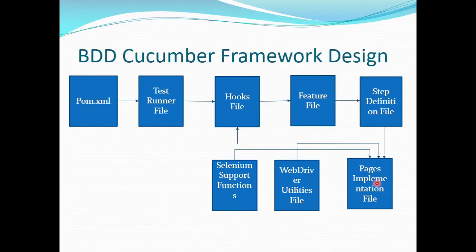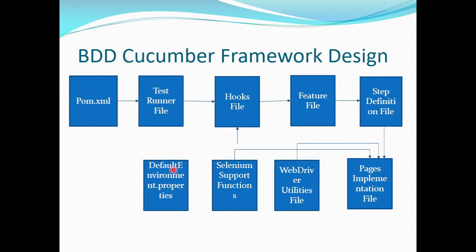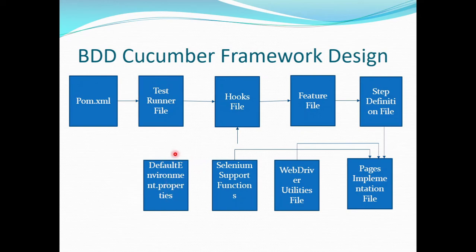Next in the execution we have the default environment.properties file. This is a .properties file where we define all the environment properties related to the application — such as the URL, username, password, the environment we want to run in, and the database we want to connect to. All application-related properties are defined in this .properties file.